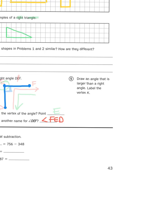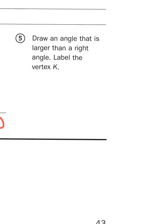And then number five says draw an angle that is larger than a right angle. So you have to ask yourself, what is larger than a 90 degree angle? And it says label the vertex K. Well, as long as you make it 91 degrees or larger, you would have an angle that is larger than a right angle. So there's a couple ways you could do that.